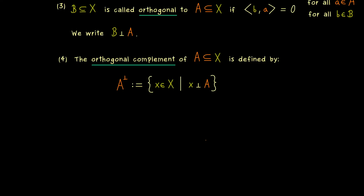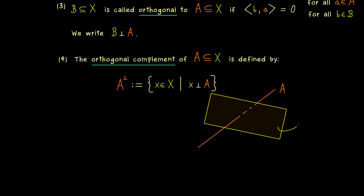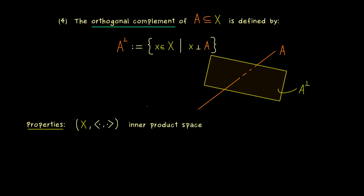For example, if A is just given by a one-dimensional line, then the orthogonal complement is a whole subspace orthogonal to A. You can immediately see that A⊥ could be an infinite dimensional subspace. Moreover, it is definitely always a subspace and not just a subset. We can collect this and related facts as properties of the orthogonal complement, which hold for any inner product space X and any subset A inside.